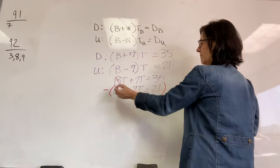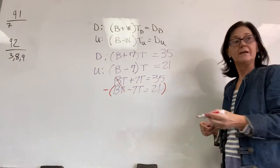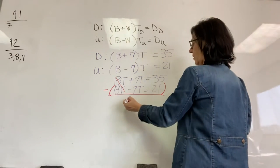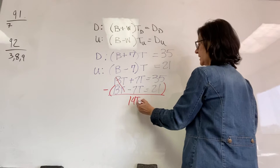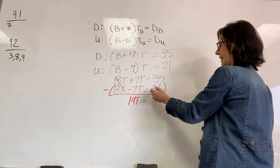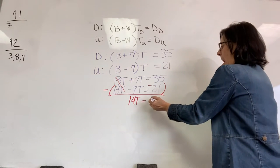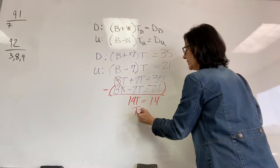So my BTs eliminate. That's 7 minus negative, which gives me a positive 7. So I end up with 14T equals, I'm subtracting, so that's a minus, 14. Time is 1.